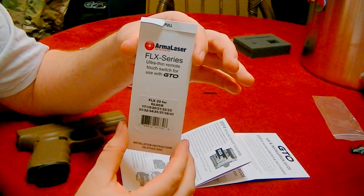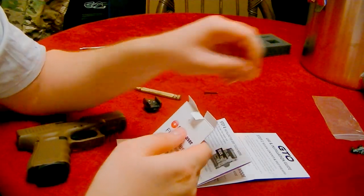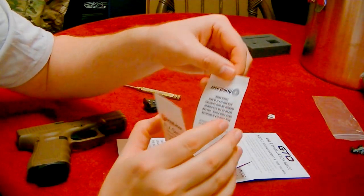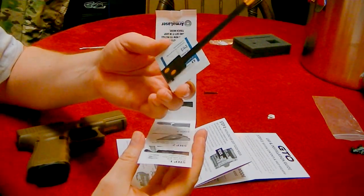Now keep something in mind: once you put this touch activated switch on here, there's no going back. It's done. I took my tape off. Now I'm going to open it up. Inside is a little wipe looks like, and here is the actual activation switch.